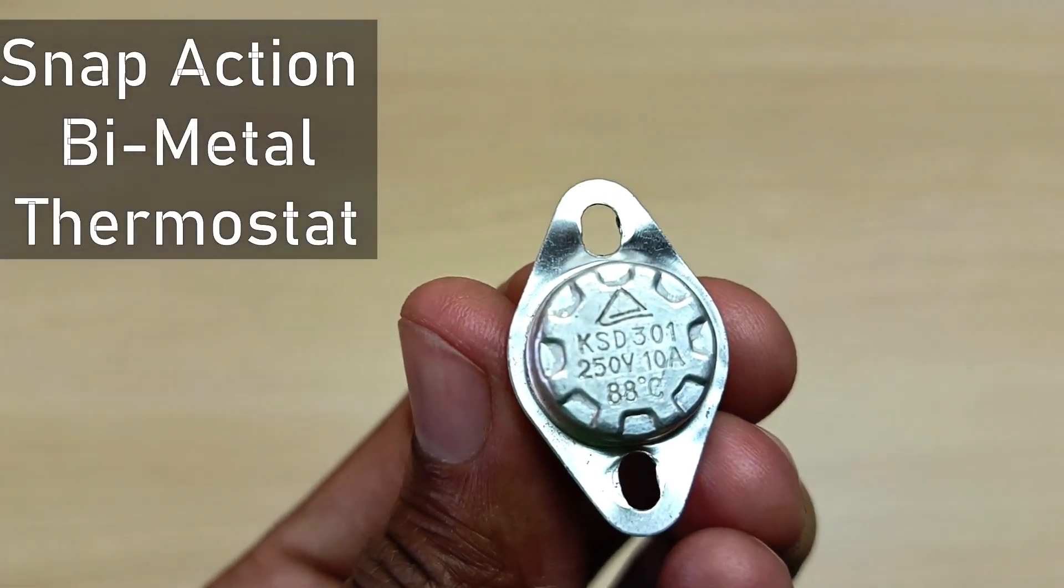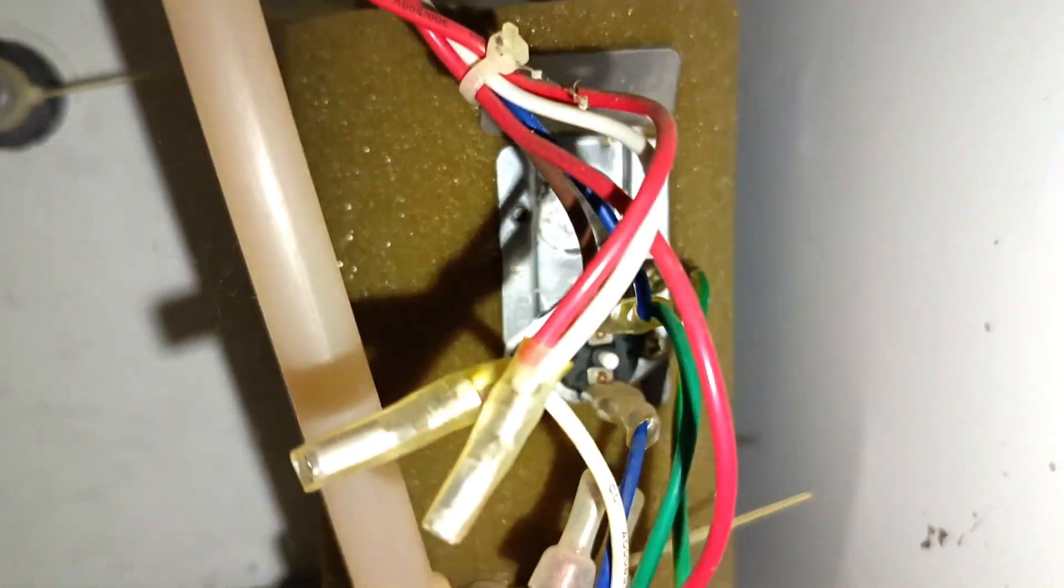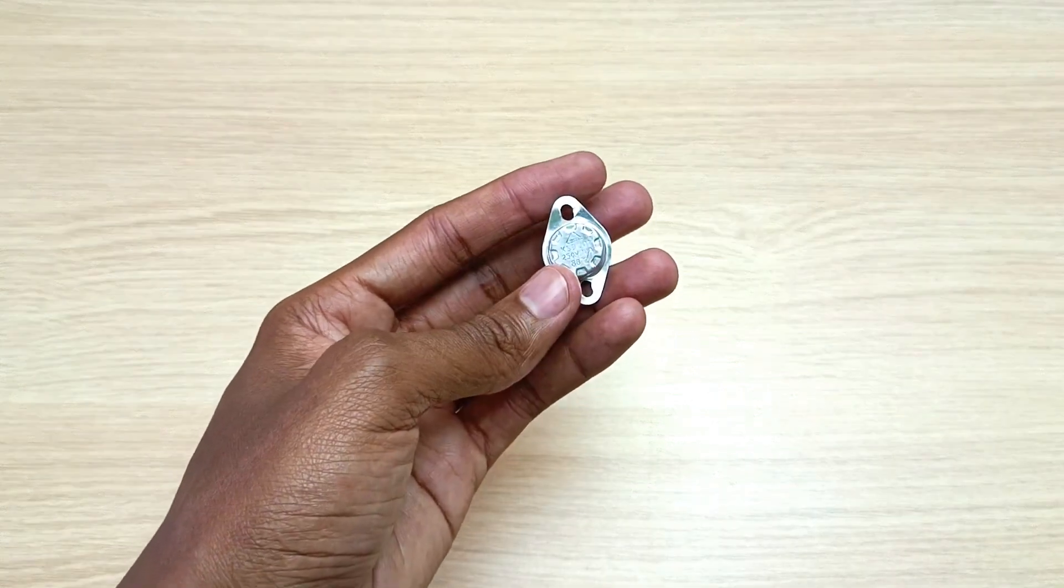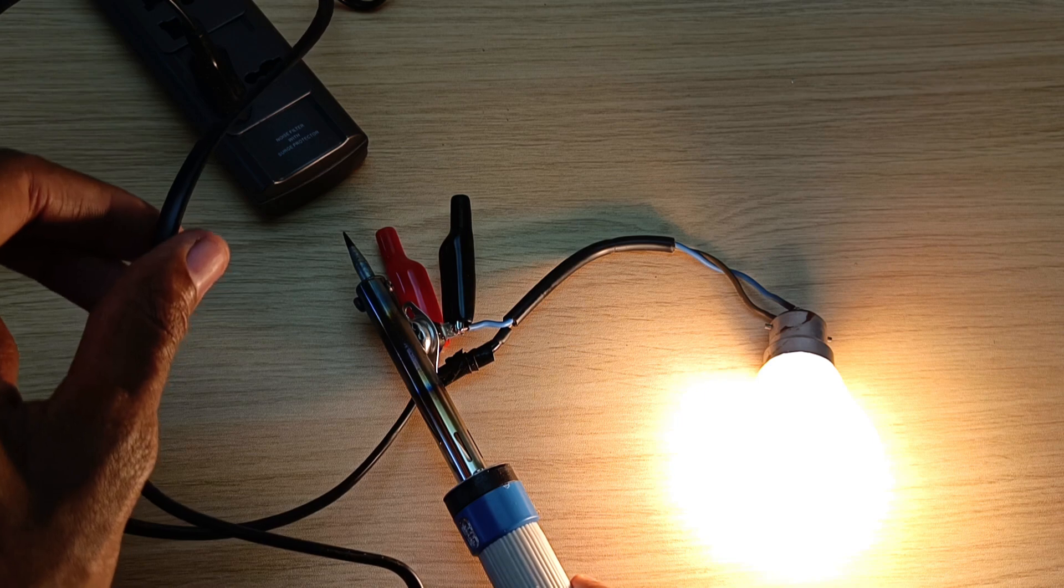This is a snap action bimetallic thermostat or a temperature control switch. I removed this component from a water dispenser for the purposes of repair. This one happens to be spoiled and in this video you're going to learn everything about this gadget, how it works and how to repair it.